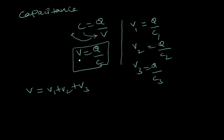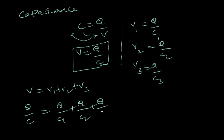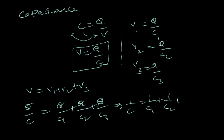From these equations, V equals Q by C1 plus Q by C2 plus Q by C3. Therefore, Q by C equals Q by C1 plus Q by C2 plus Q by C3. Taking Q common and cancelling it from both sides, we are left with 1 by C equals 1 by C1 plus 1 by C2 plus 1 by C3. This is the equivalent capacitance.